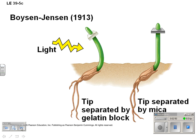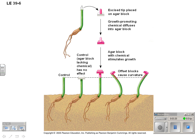Boysen and Jensen took it one step farther. They thought it was the tip, but what is it about the tip? They hypothesized there was some chemical from the tip causing it to bend. They cut the tip off and placed a piece of gelatin — which allows diffusion — between the tip and stem, and in another trial used mica, which is basically a rock so nothing can pass through. There was curvature with gelatin but not mica. They then placed the excised tip on a block of agar, letting the chemical diffuse in. No tip and no agar block meant no bending; an agar block with the chemical caused growth. When they moved the block to one side of the plant, it curved away from where the block was.